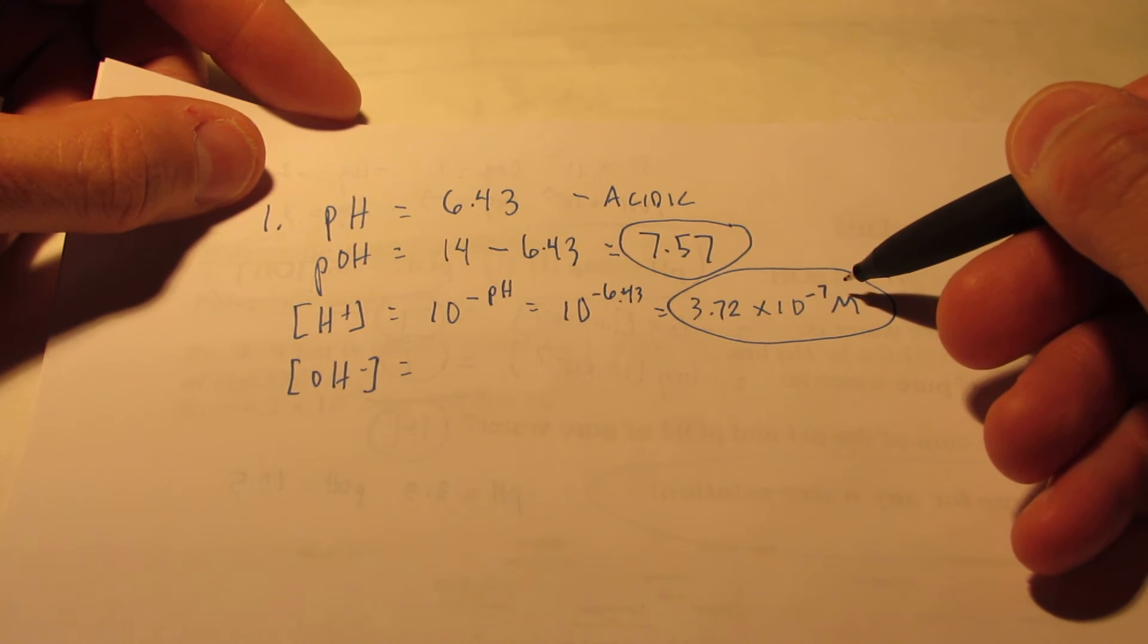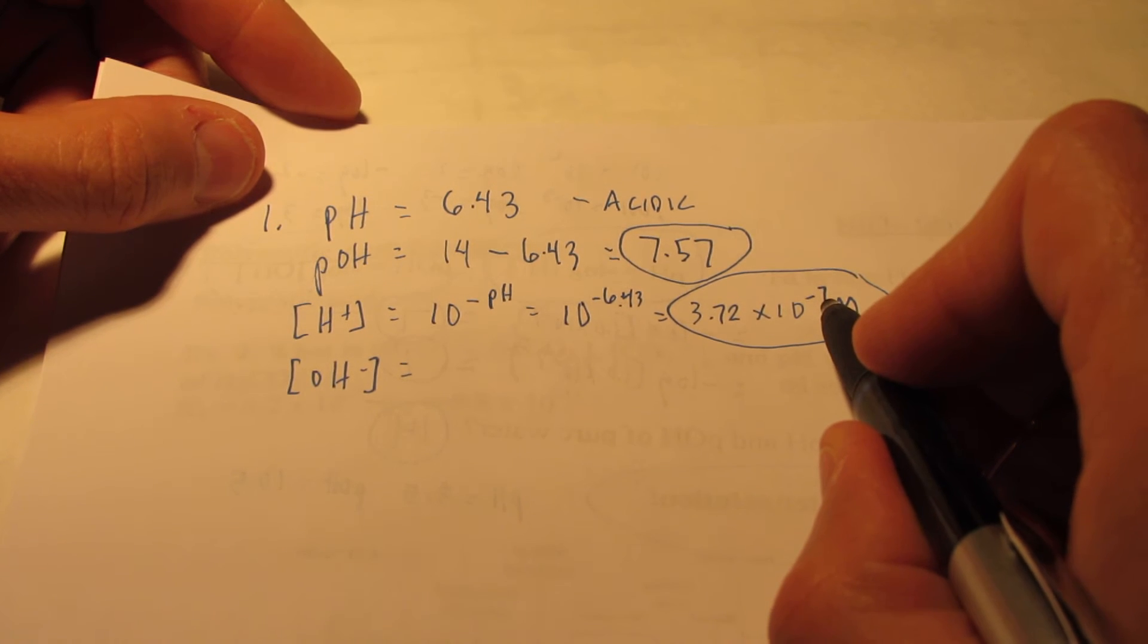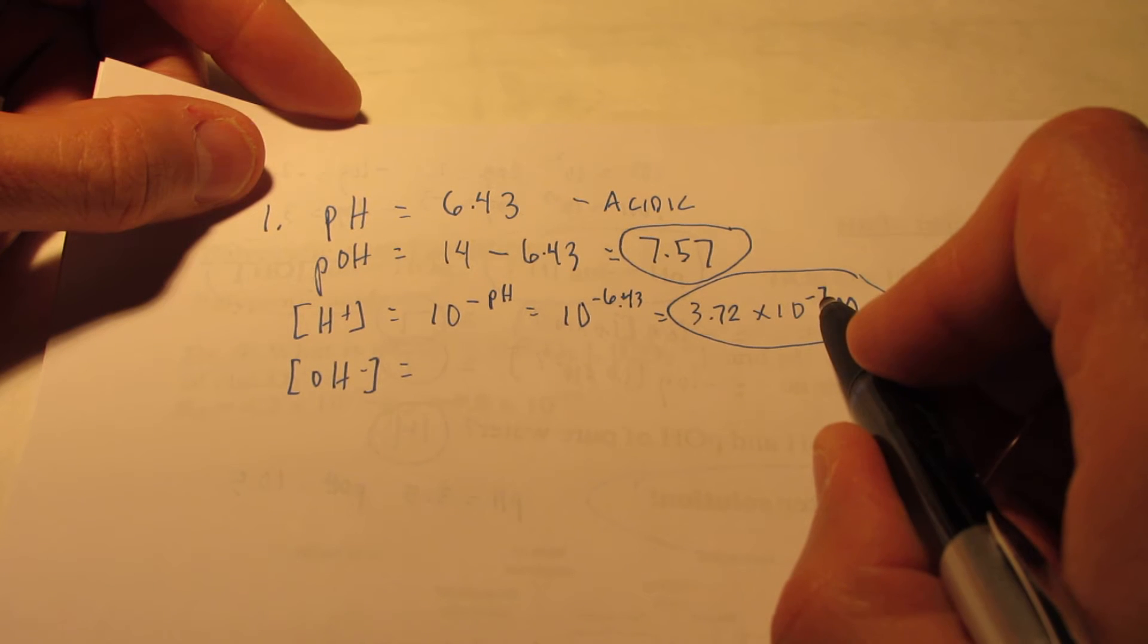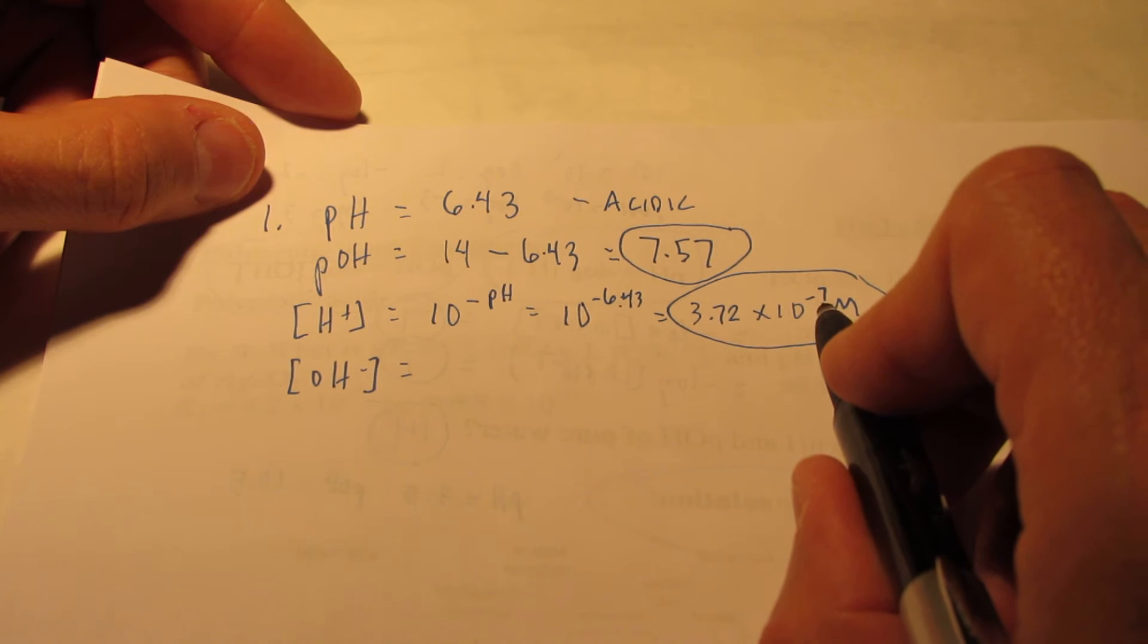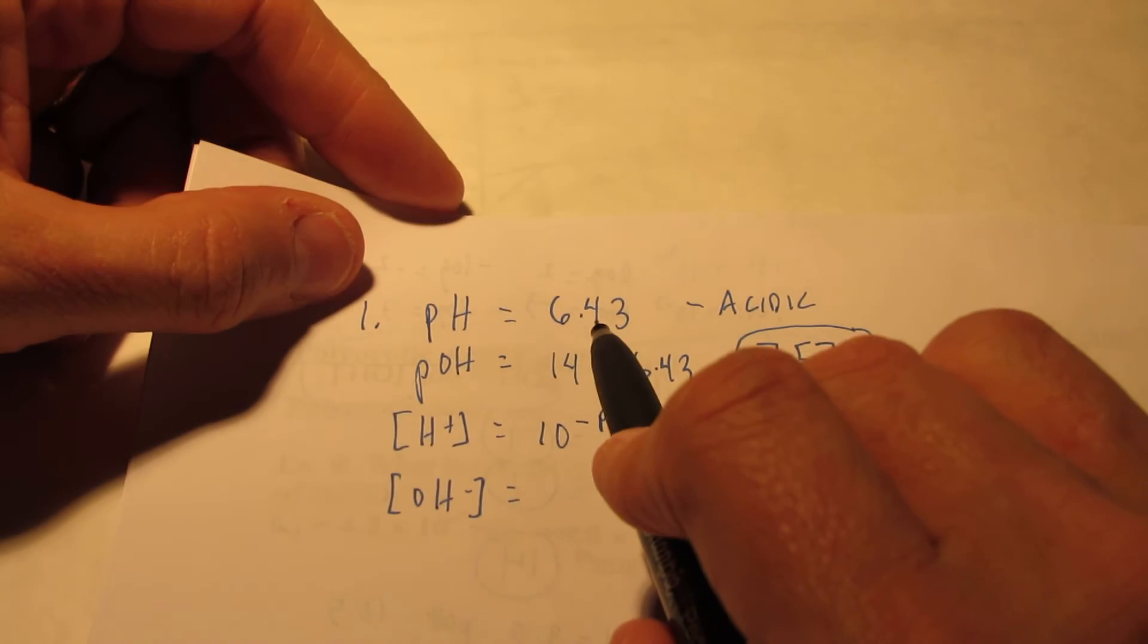By the way, we knew that would have to be between 6 and 7. Alright, the negative log of that would be 7. That number is bigger than 1, so it's going to be between 6 and 7. And that's what we got, 6.43.